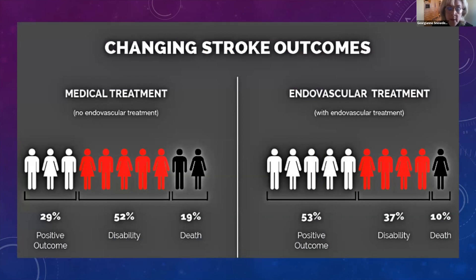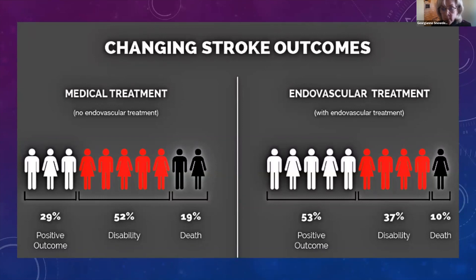Endovascular stroke therapy is really changing stroke outcomes. There are several trials ongoing. We started with our first endovascular tool in 2004 — I was around and using the Merci device, which was cumbersome and difficult to use. But our ability to aspirate or remove thrombus now is over 85% to 86% of the time. Compared to the non-endovascular treatment arm, we are really making an impact in patient outcomes.